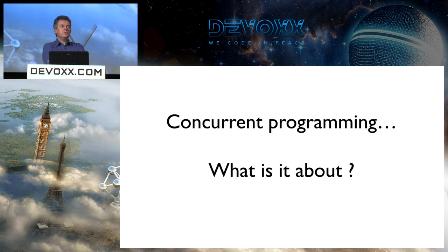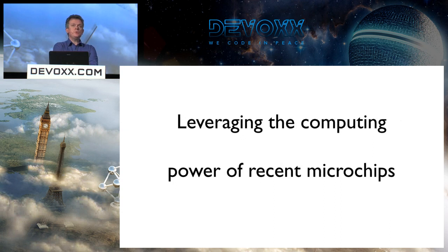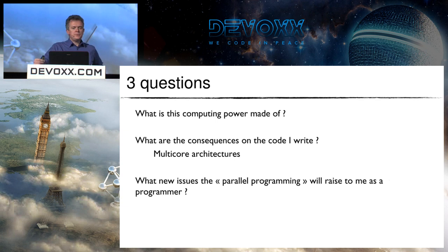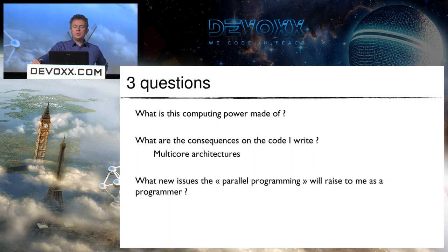So, concurrent programming — what is it about? The answer is very simple and you can tell it in one sentence: it's about leveraging the computing power of recent CPUs, and that's all. It's probably the only way to do that, as we're going to see. This raises three questions: first, what is this computing power made of? And what are the consequences of this structure on the code I write as a Java developer? We're going to talk about multi-core architectures from the hardware point of view.